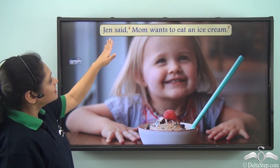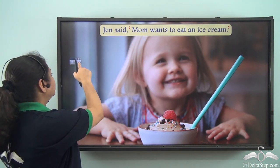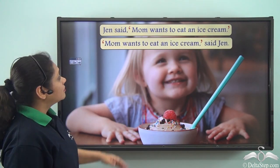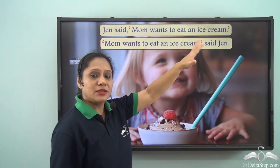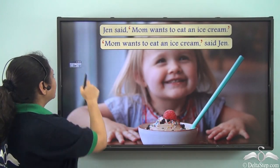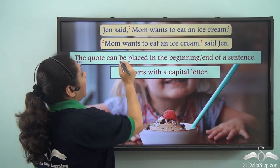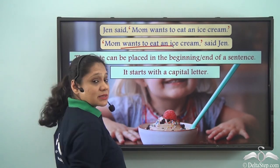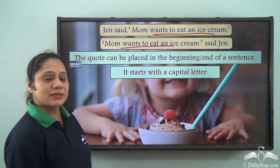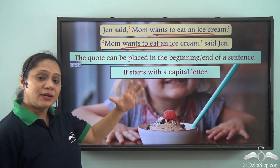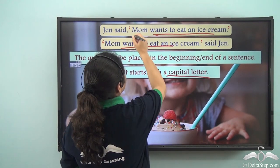For example: Jen said, 'Mom wants to eat an ice cream.' Or: 'Mom wants to eat an ice cream,' said Jen. So we can see that the quote can be placed either at the beginning of the sentence or at the end. Wherever we place it, the quote always starts with a capital letter.